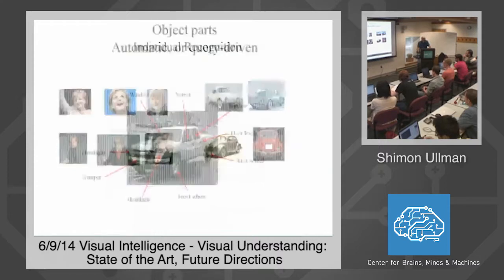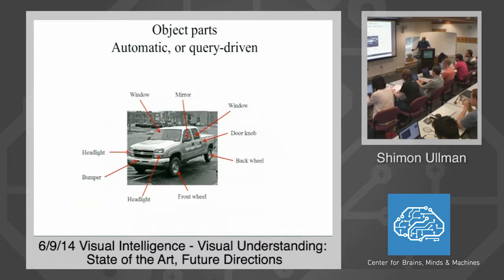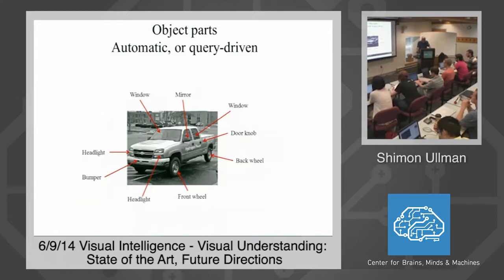Even when dealing with a single object, the problem is more difficult than just producing a label that this is a car or an airplane. When we look at an image, we know almost every pixel what it represents — the windshield, the door, and so on. We would like, eventually, to get a complete interpretation of the object in terms of everything a person might get out of the image. This is a difficult problem, and relatively little progress has been achieved on it.